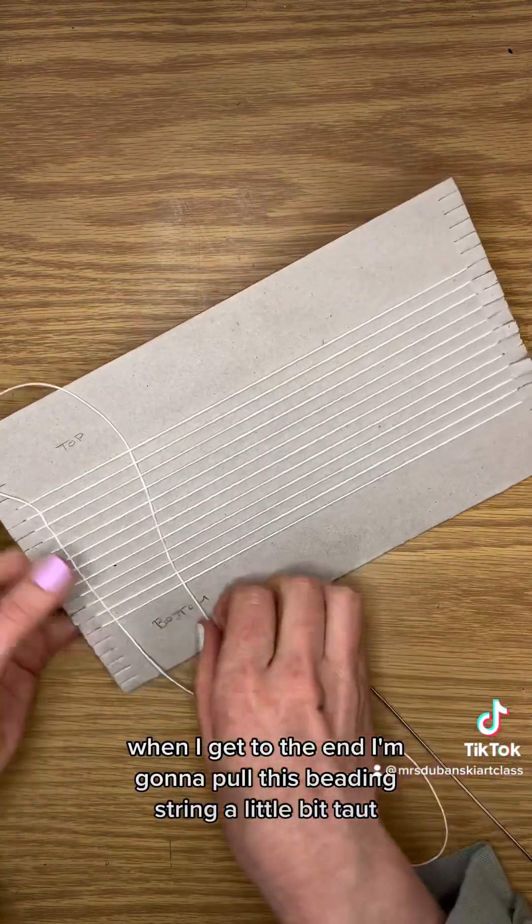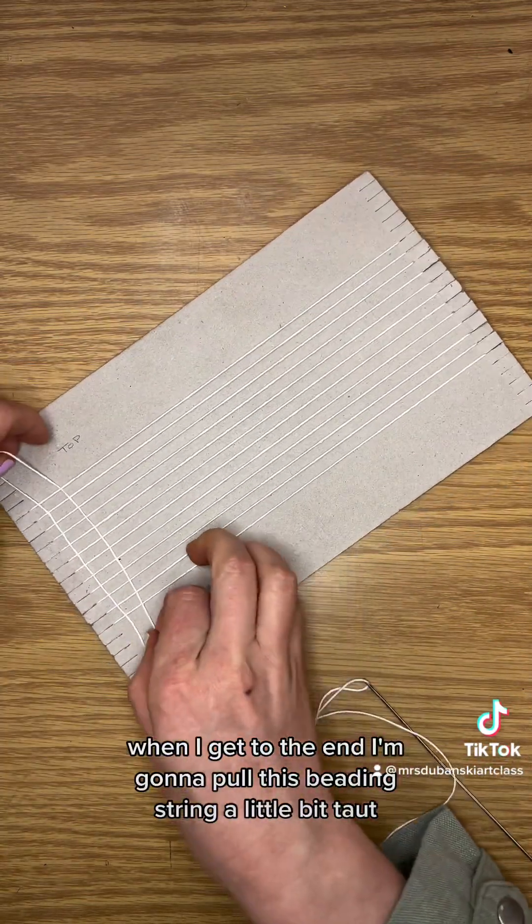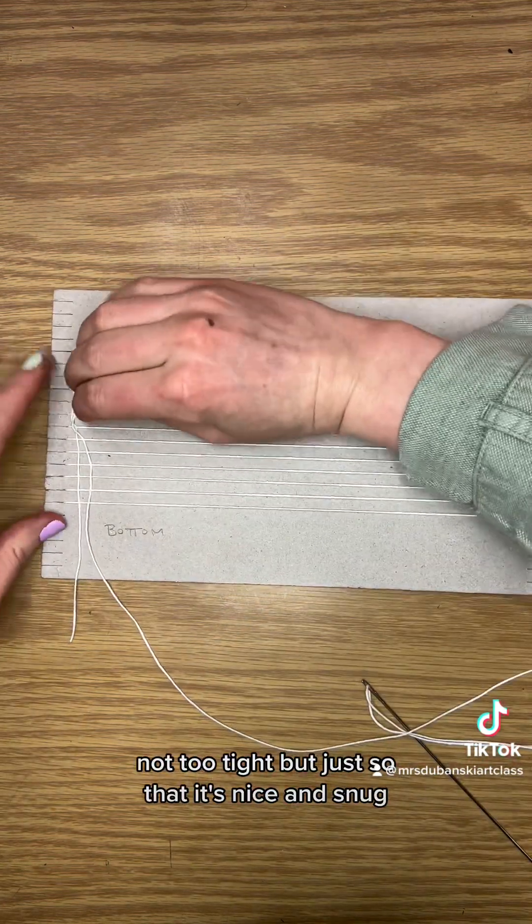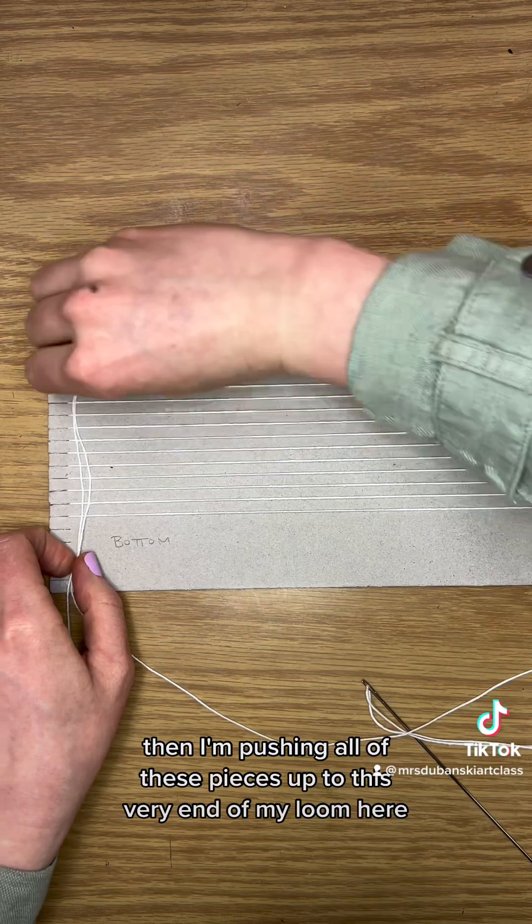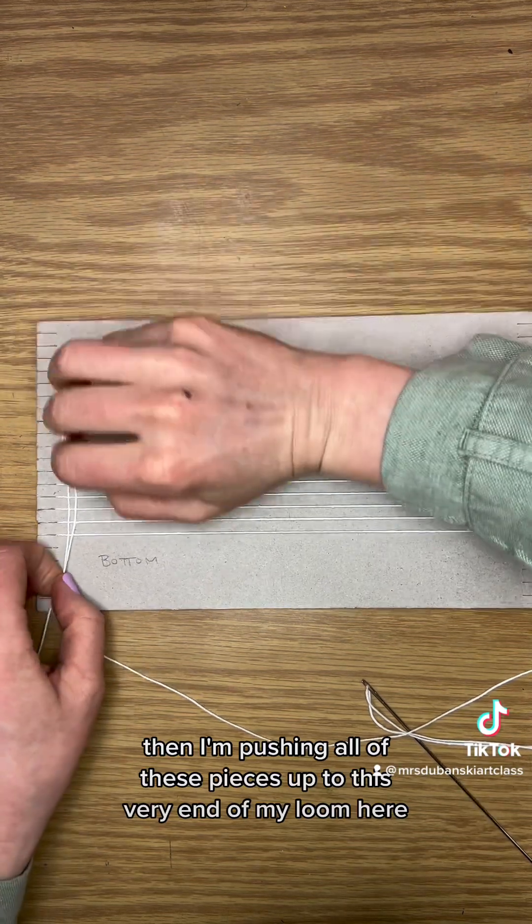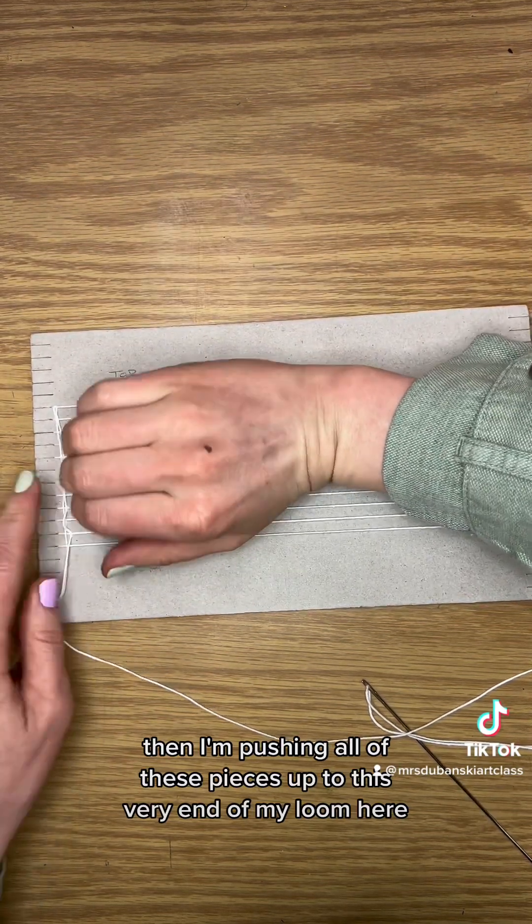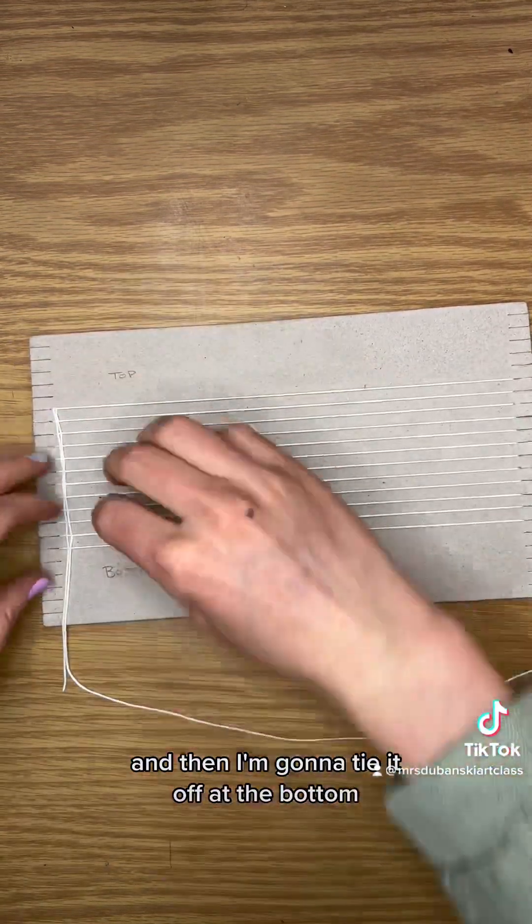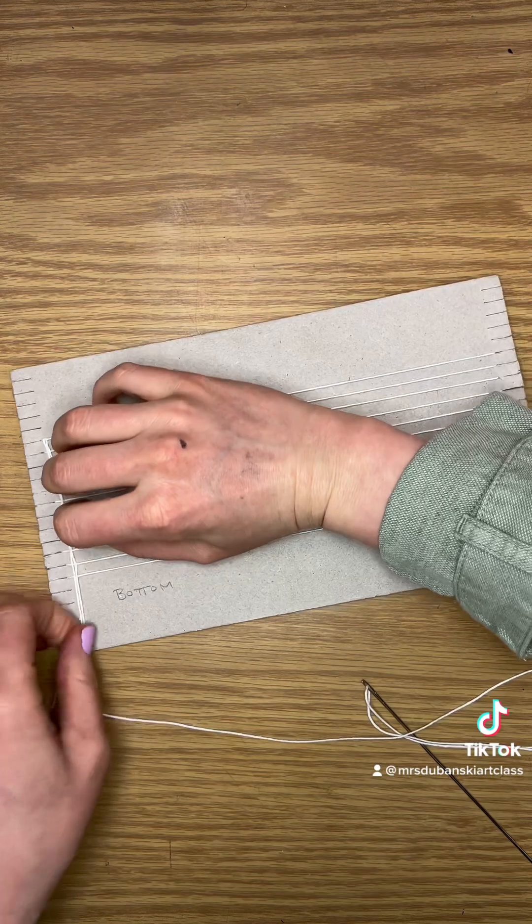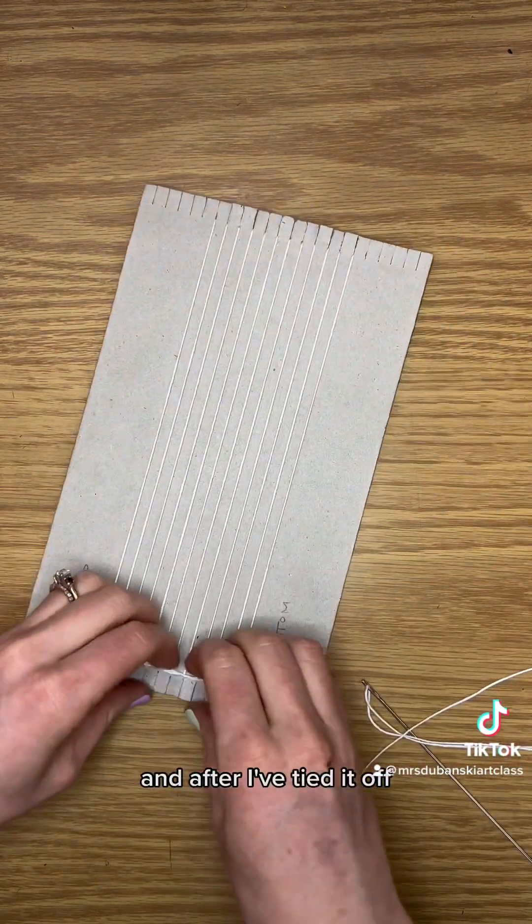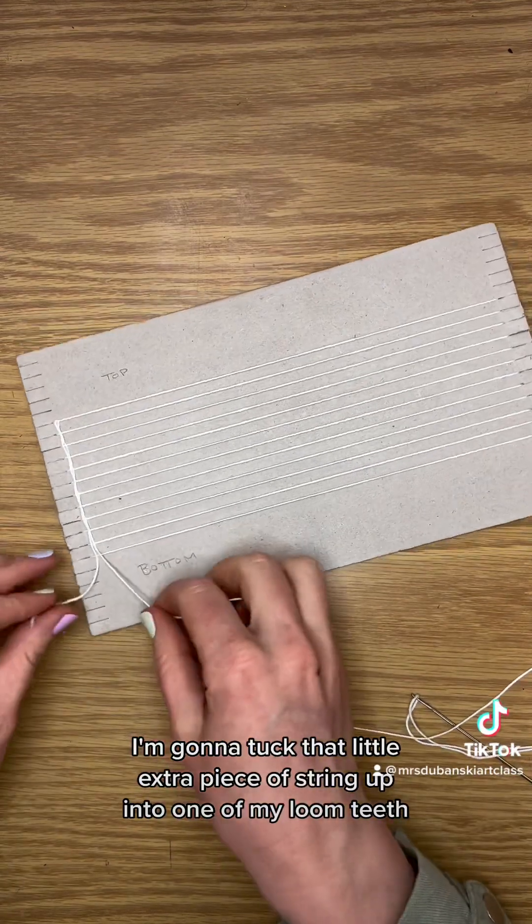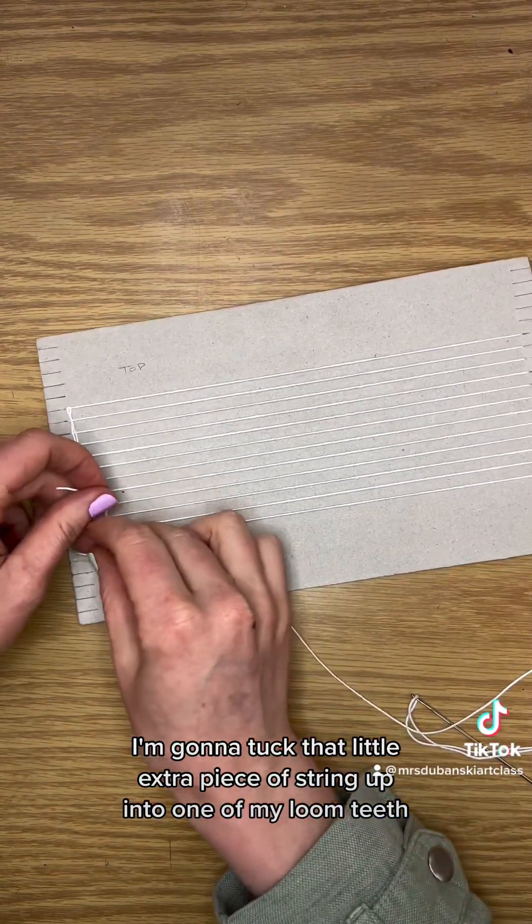When I get to the end I'm gonna pull this beading string a little bit taut, not too tight, but just so that it's nice and snug. Then I'm pushing all of these pieces up to this very end of my loom here. And then I'm gonna tie it off at the bottom. And after I've tied it off, I'm gonna tuck that little extra piece of string up into one of my loom teeth.